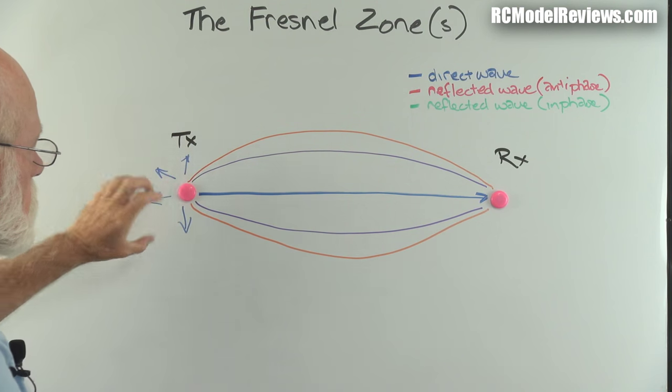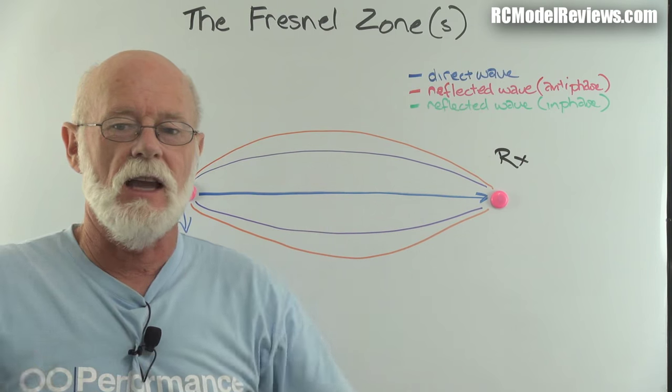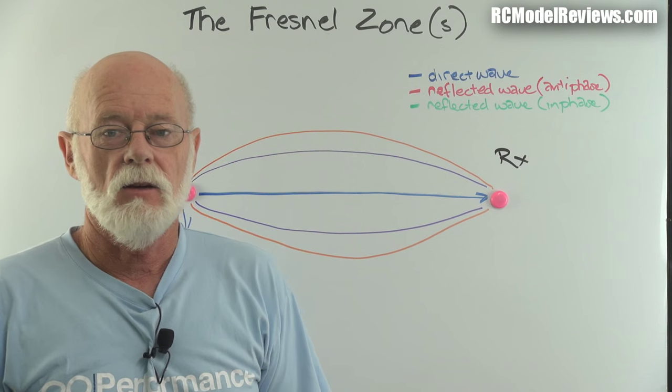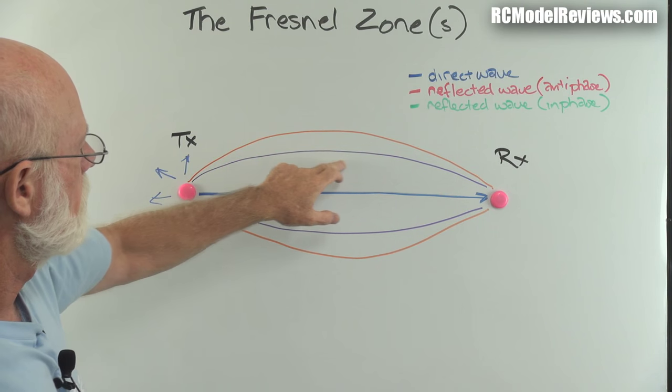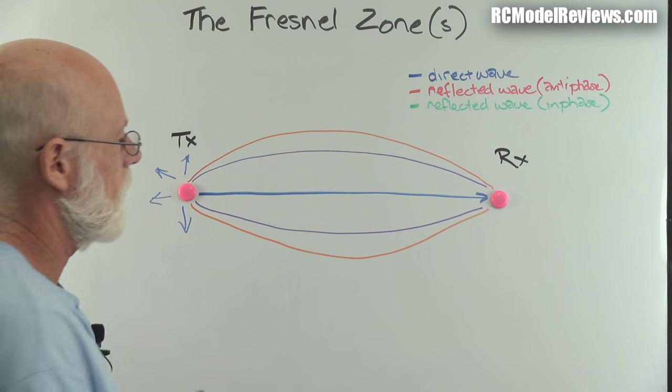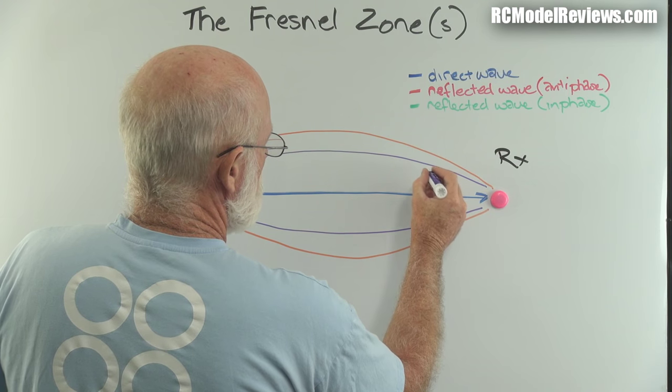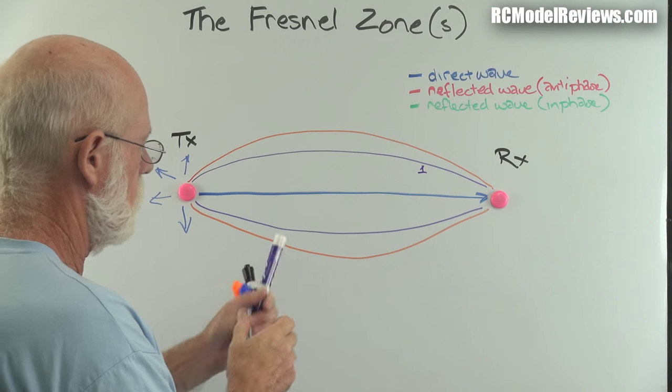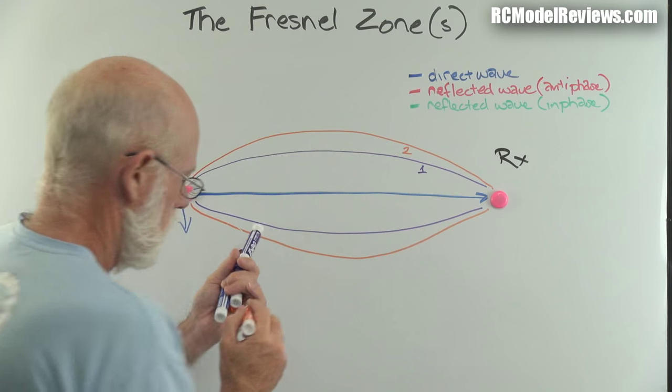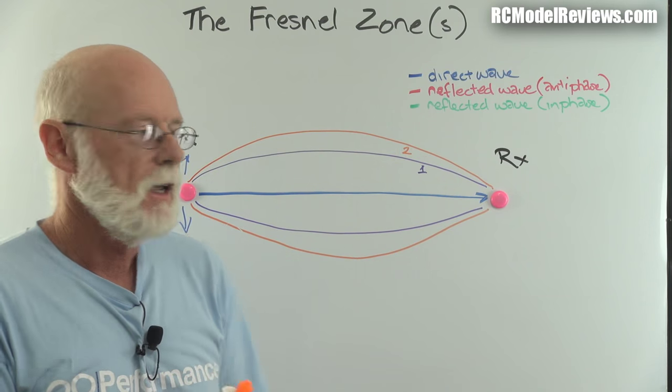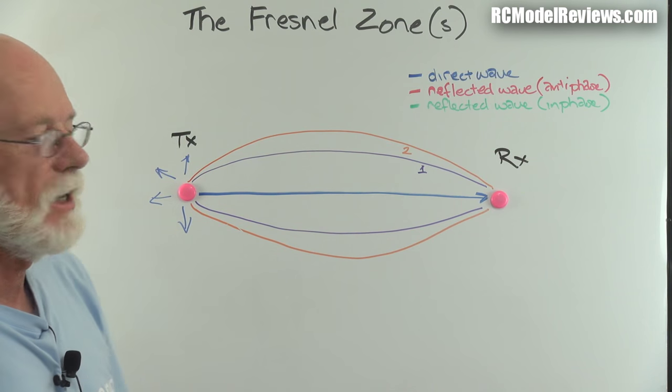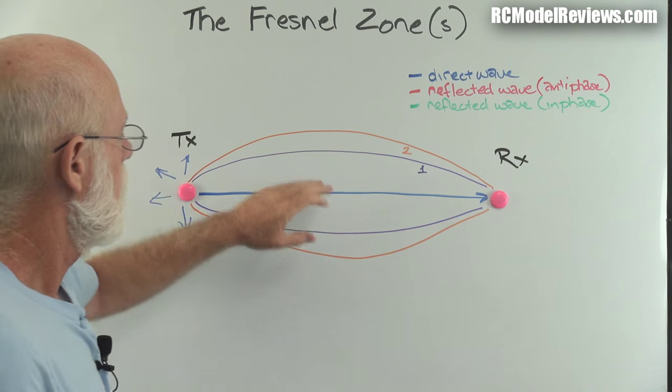So omnidirectional transmitters are the norm in our hobby. So I've drawn some lines here. I've got a purple line, which I shall annotate now. The purple line is zone number one. And there is an orange line, which is zone number two. And so there are even zones and odd zones. And it's important because two different things happen when these zones are impinged on.